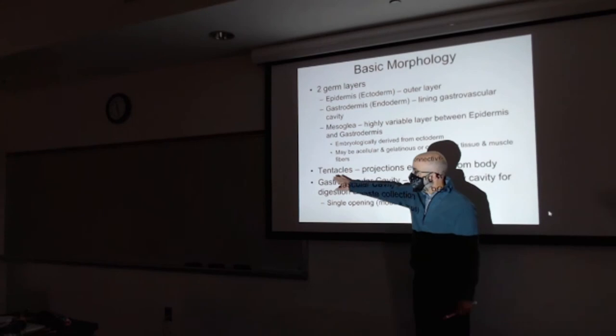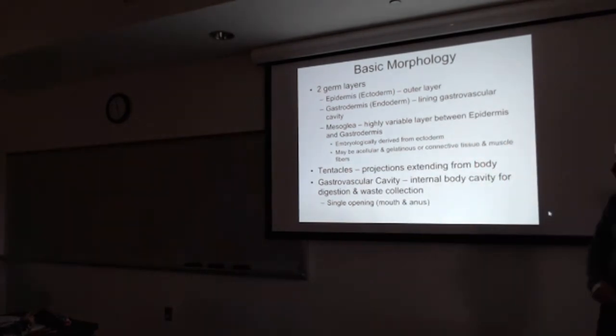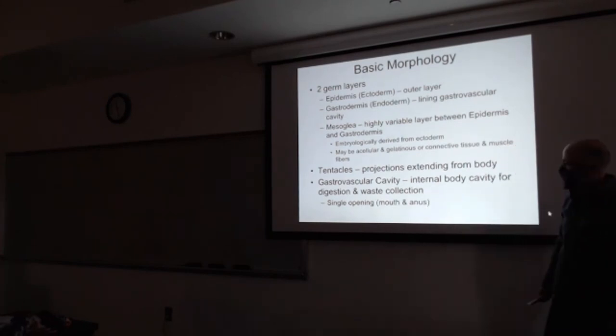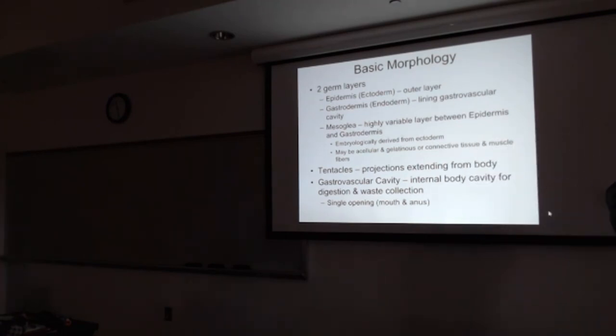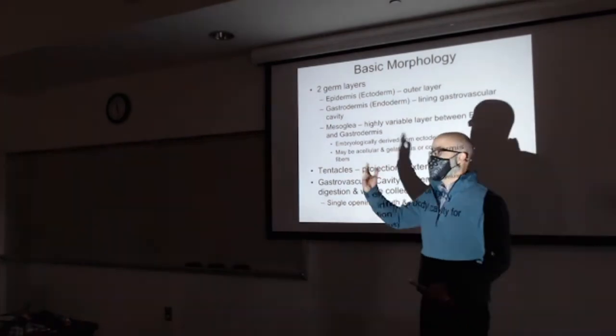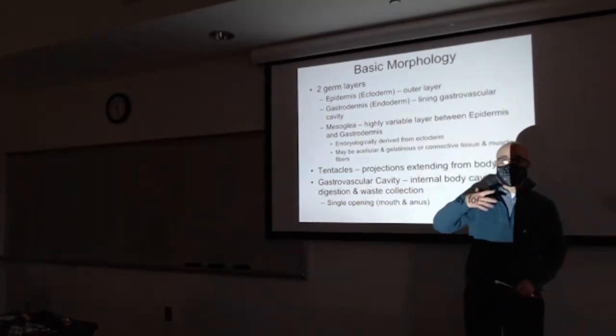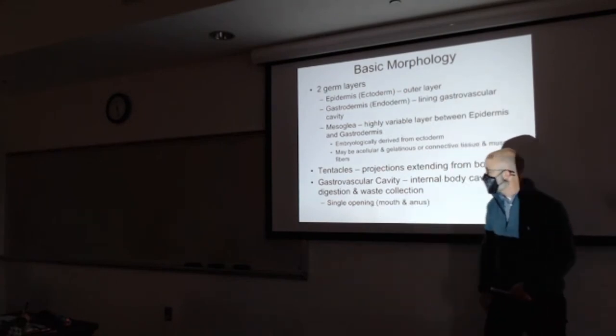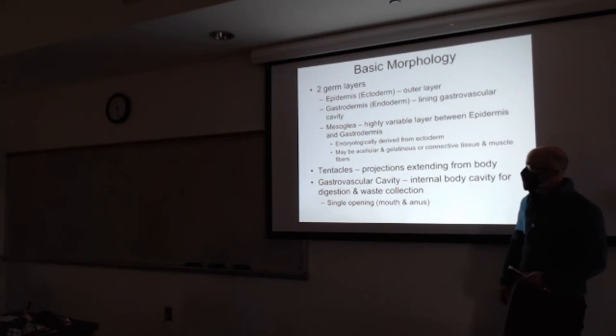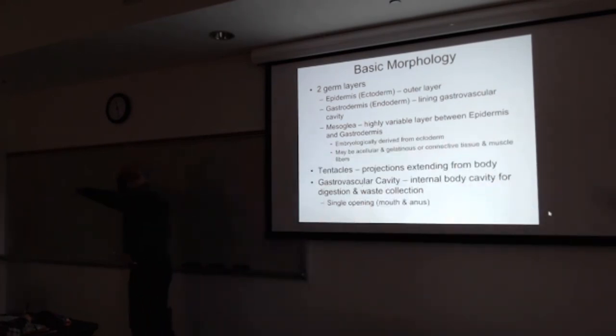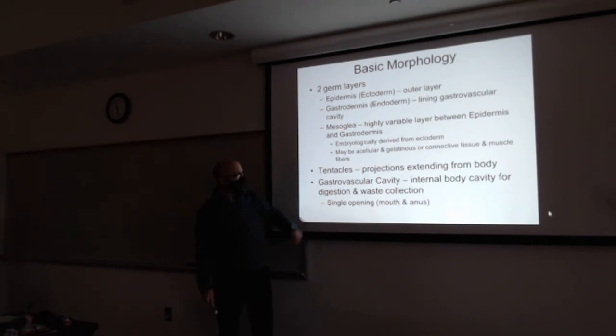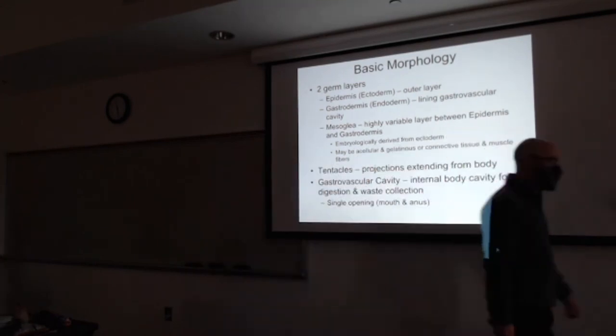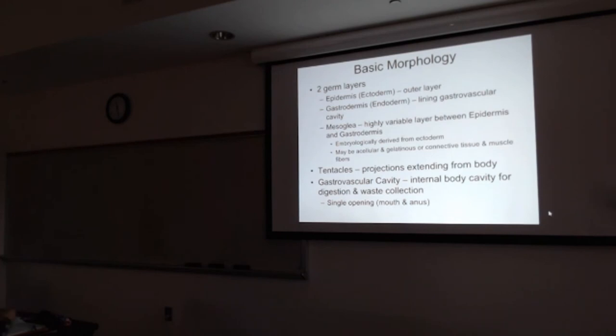And then they've got the tentacles, a common characteristic of the cnidarians, and then the gastrovascular cavity. We call it an incomplete digestive system. They have one opening that they eat and excrete from the same opening. Very different than most animals. They have a complete digestive system with separate openings. But here we have in and out of the same opening. The gastro cavity, think about gastro like the stomach.